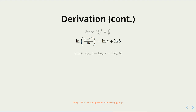Since the log of b to the base a plus the log of c to the base a is equal to the log of bc to the base a, it follows that the natural log of a plus the natural log of b is equal to the natural log of ab.